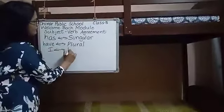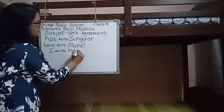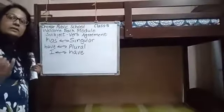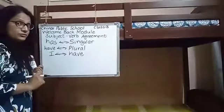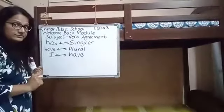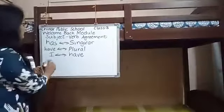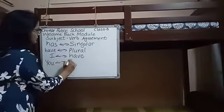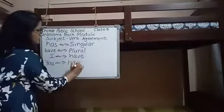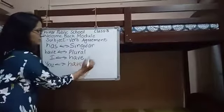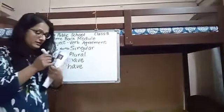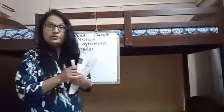With 'I', we will always use 'have'. For example, 'I have a beautiful suit.' With 'you', we will also always use 'have'. For example, 'You have a lovely ring.' 'You have a beautiful smile.'